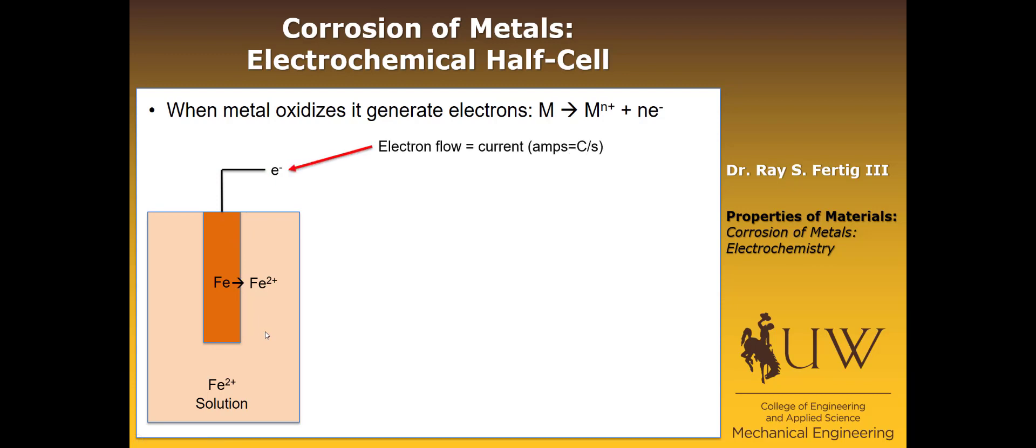The electron flow generates a current, which we're familiar with from our circuits background. You could measure that in amps, or coulombs per second. Associated with that electron, there's an energy associated with it, or a potential. We call that volts, which is joules per coulomb, or you could think of it as the energy per electron. How are we supposed to think about this energy per electron for this electrochemical half cell and this oxidation reaction?